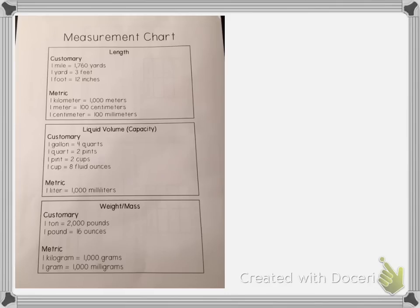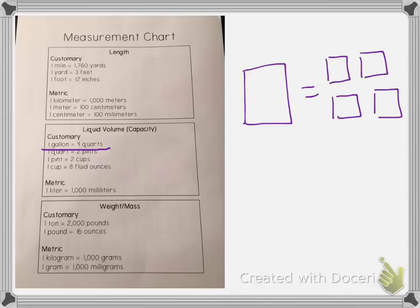So we need to know which is bigger, a gallon or a quart. If we look at our chart we see that one gallon equals four quarts. So let's pretend like here's my gallon that is equal to four quarts. So a gallon is going to be bigger than a quart.